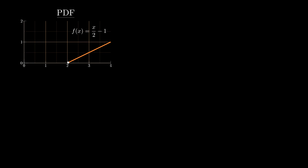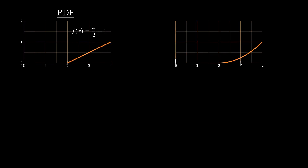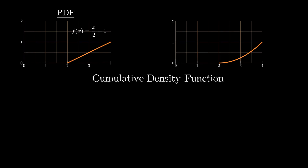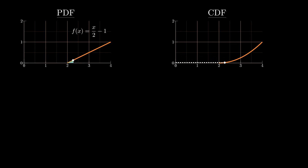Let's pretend we've got some probability density function given by a half of x minus 1. When graphed, it gives us a triangle and the area under the triangle should equal 1. Relating this to what this video is about, we're looking at cumulative density functions or cumulative distribution functions, where the y-values on those functions are representative of the area under the probability density function.